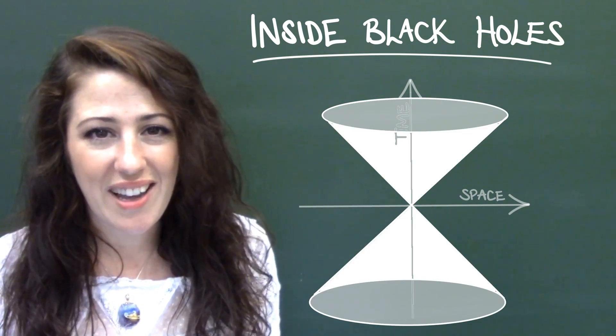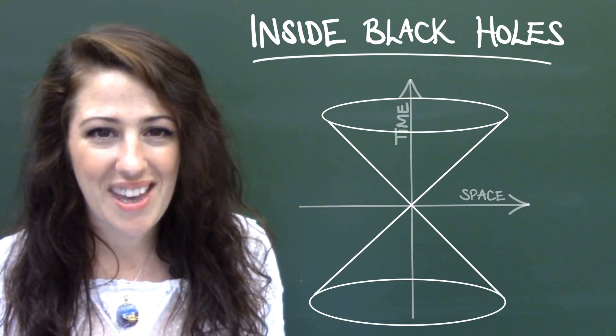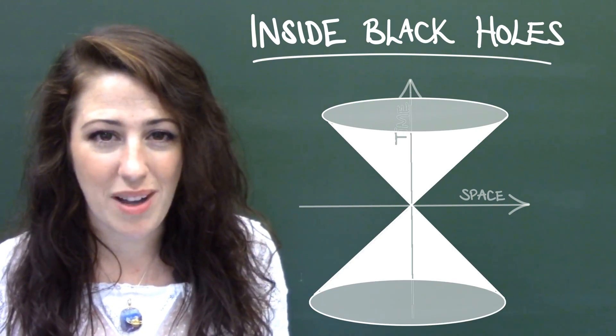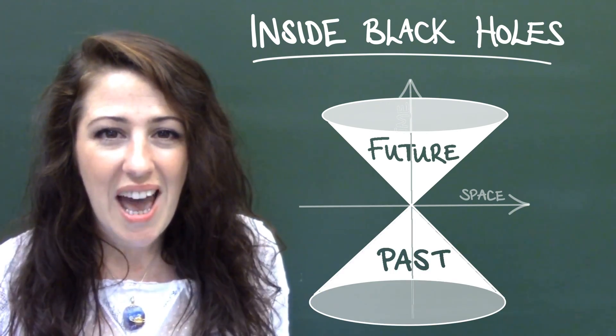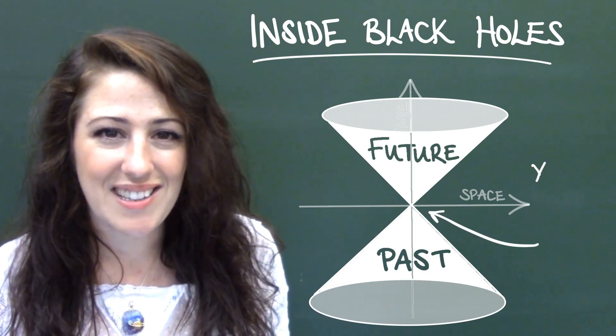Inside the light cone we have the universe we are familiar with. It is said to be time-like. The top cone contains the future and the bottom the past, and the point where the lines meet is the present.